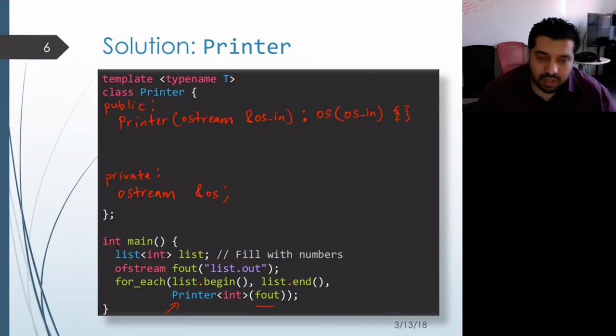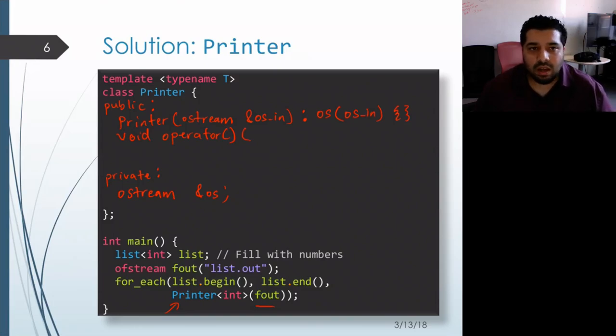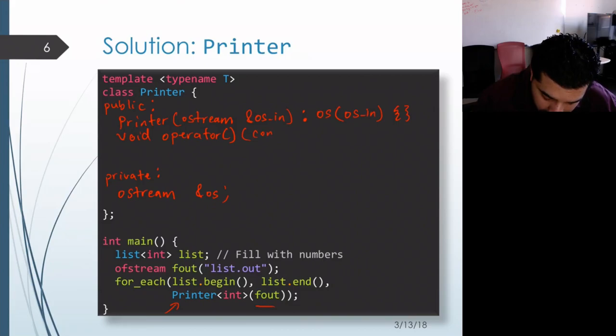Okay, now we have the constructor, so we can go ahead and write the function call operator, the overloaded function call operator. So it doesn't need to return anything. Its name is operator(), and it's going to take in an object of type T, and it should take it in by reference to const.